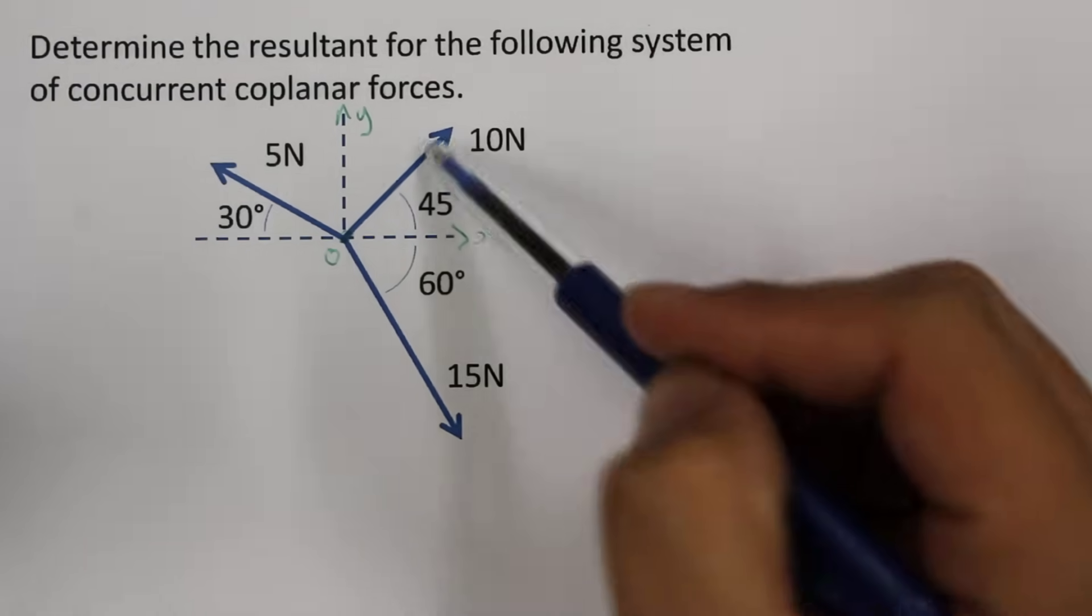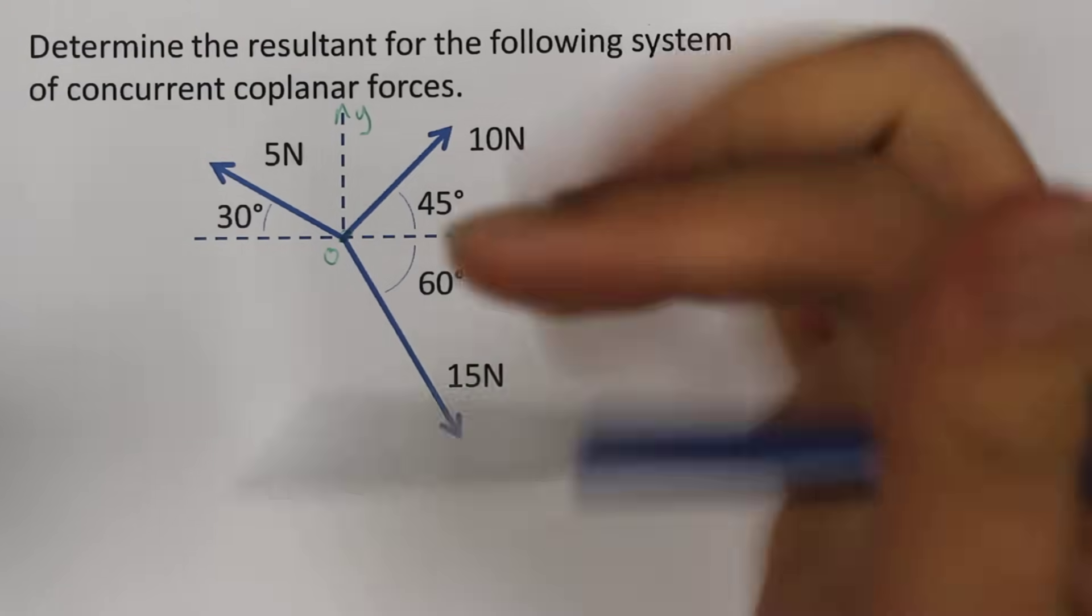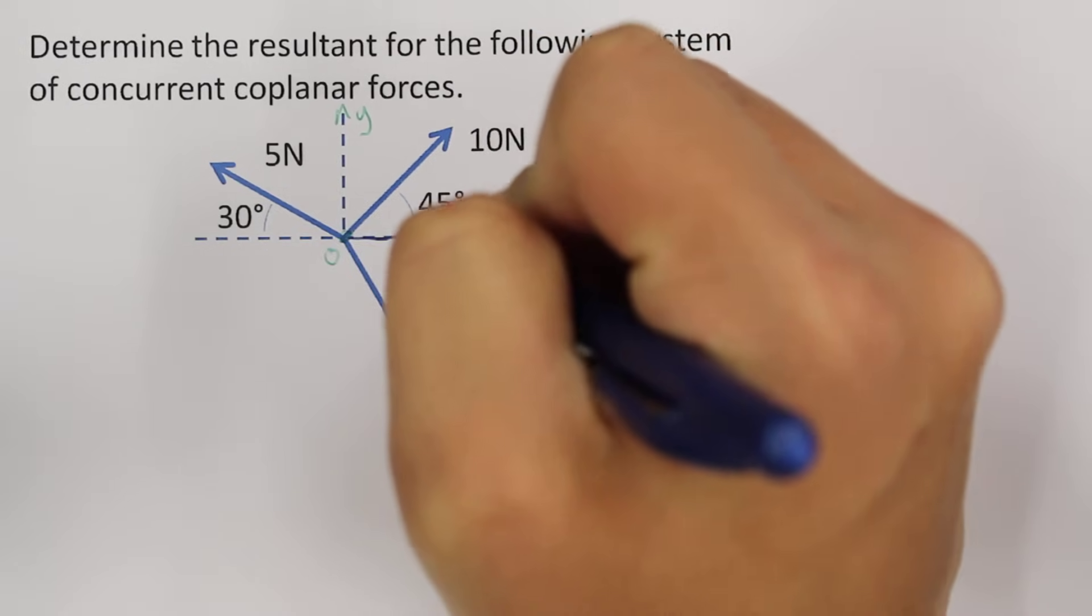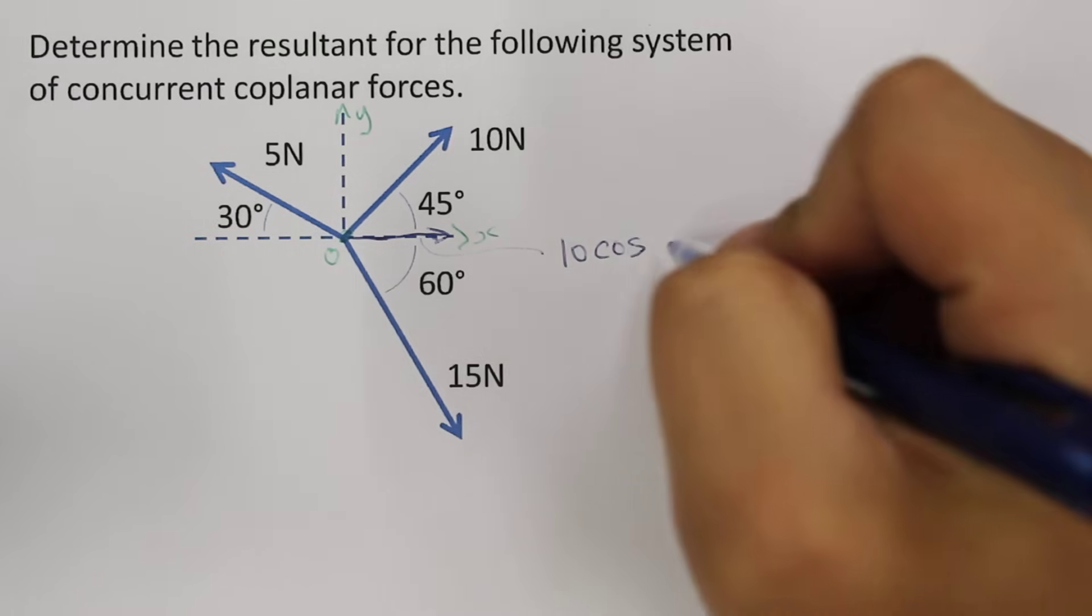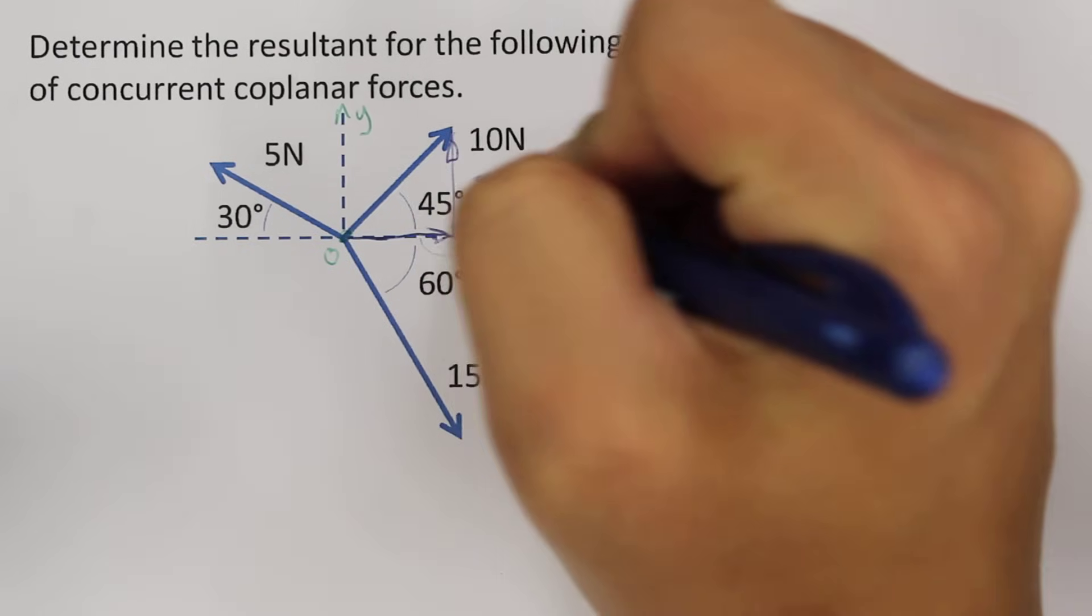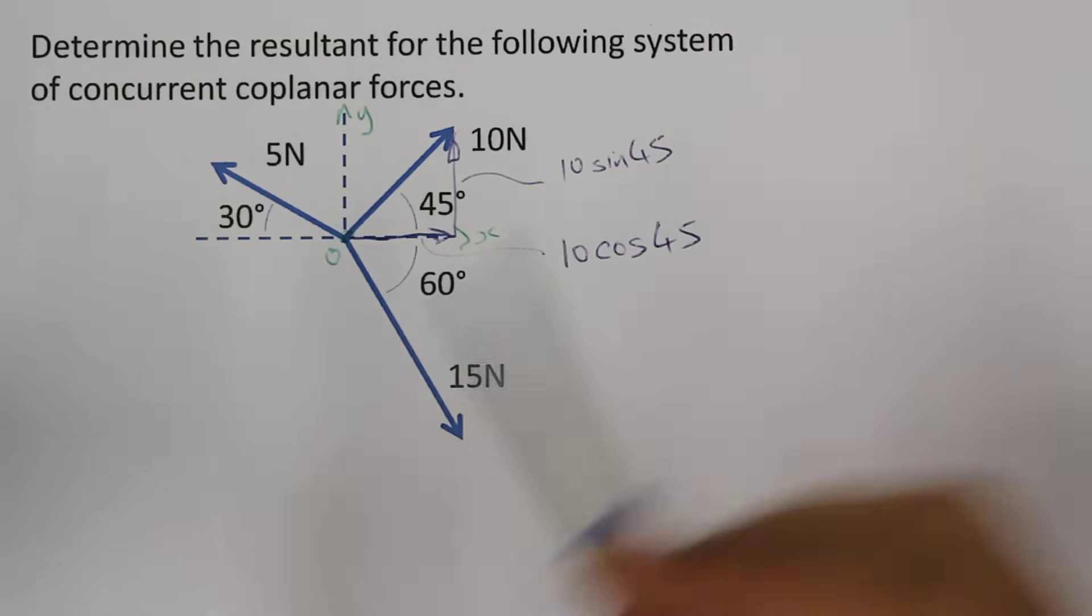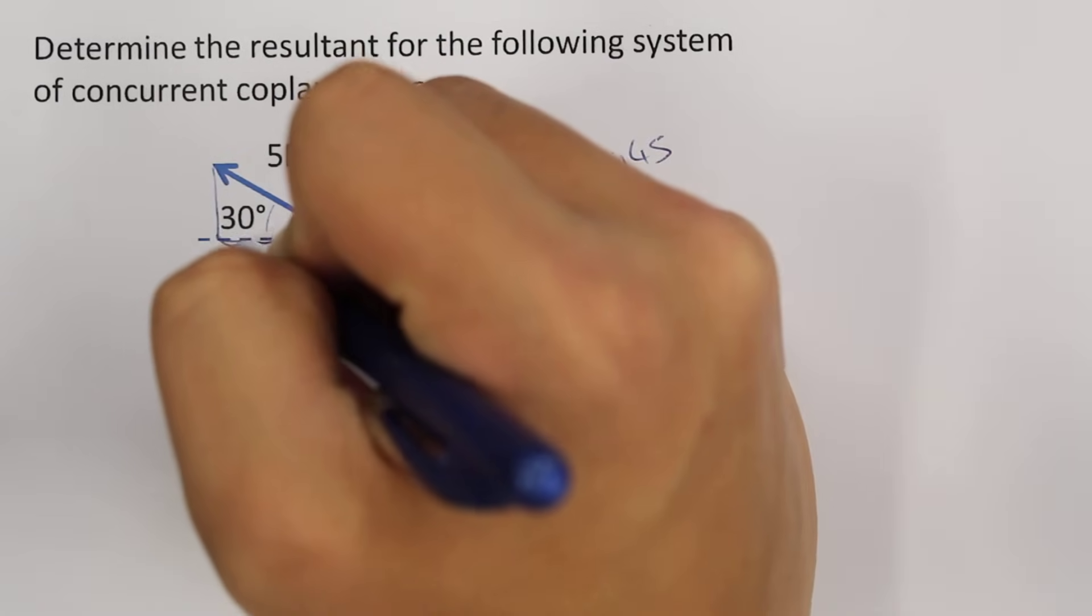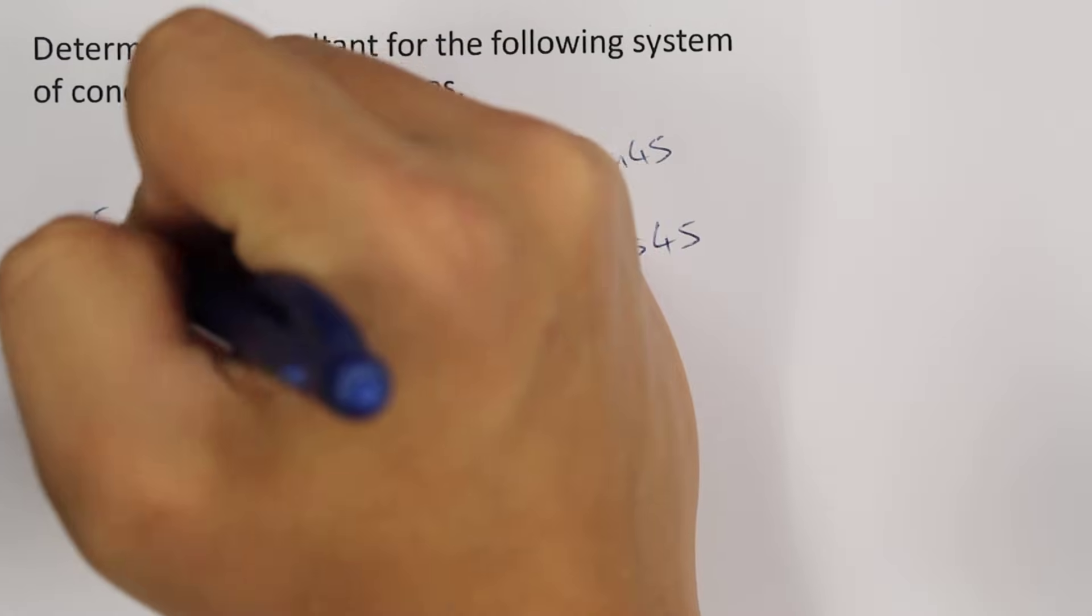The forces which we have here can be resolved into their x-component and y-component. For example, the 10N force can be replaced with a force going towards the right, where its magnitude would become 10 cosine 45, and a y-component which would become 10 sine 45. Also, for the 5N force, that can be resolved into a component in the x-direction, which will be 5 cosine 30, and 5 sine 30.